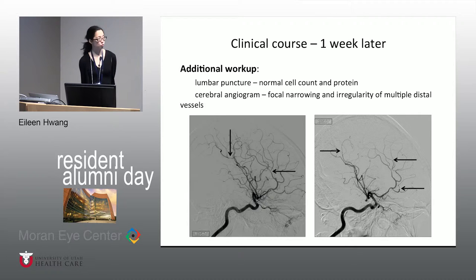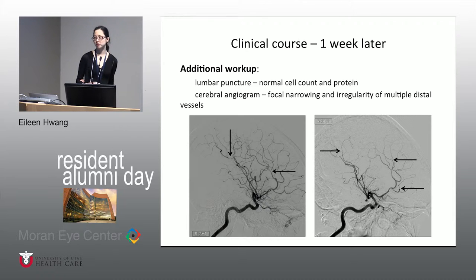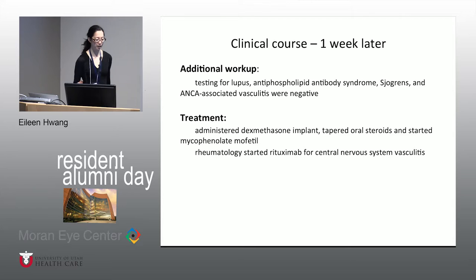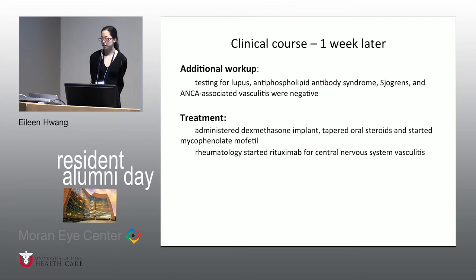One week later, she had a lumbar puncture which was normal, and a cerebral catheter angiogram that demonstrated focal narrowing and irregularity in multiple vessels of the anterior and posterior circulation. They didn't find abnormalities of the deep penetrating vessels from the basilar artery that would have supplied her pons, but those may have been too small to see. Additional workup for lupus, antiphospholipid antibody syndrome, Sjögren's, and ANCA-associated vasculitis was all negative. Dr. Shakur injected an Ozurdex implant and started her on CellCept, and rheumatology started her on rituximab for her presumed central nervous system vasculitis.